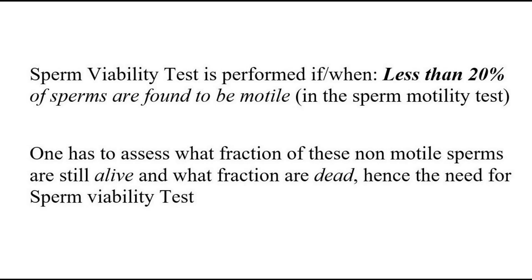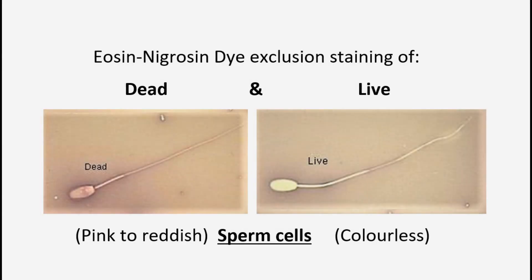This particular test is applicable in cases where the motility of the sperms is drastically low, that is less than 20%. Viability testing is based on the principle of differential staining property of live and dead sperms, also known as dye exclusion assays. Dye exclusion assays rely on the ability of live sperms to resist absorption of certain dyes, whereas these dyes penetrate and stain non-viable or dead sperms.